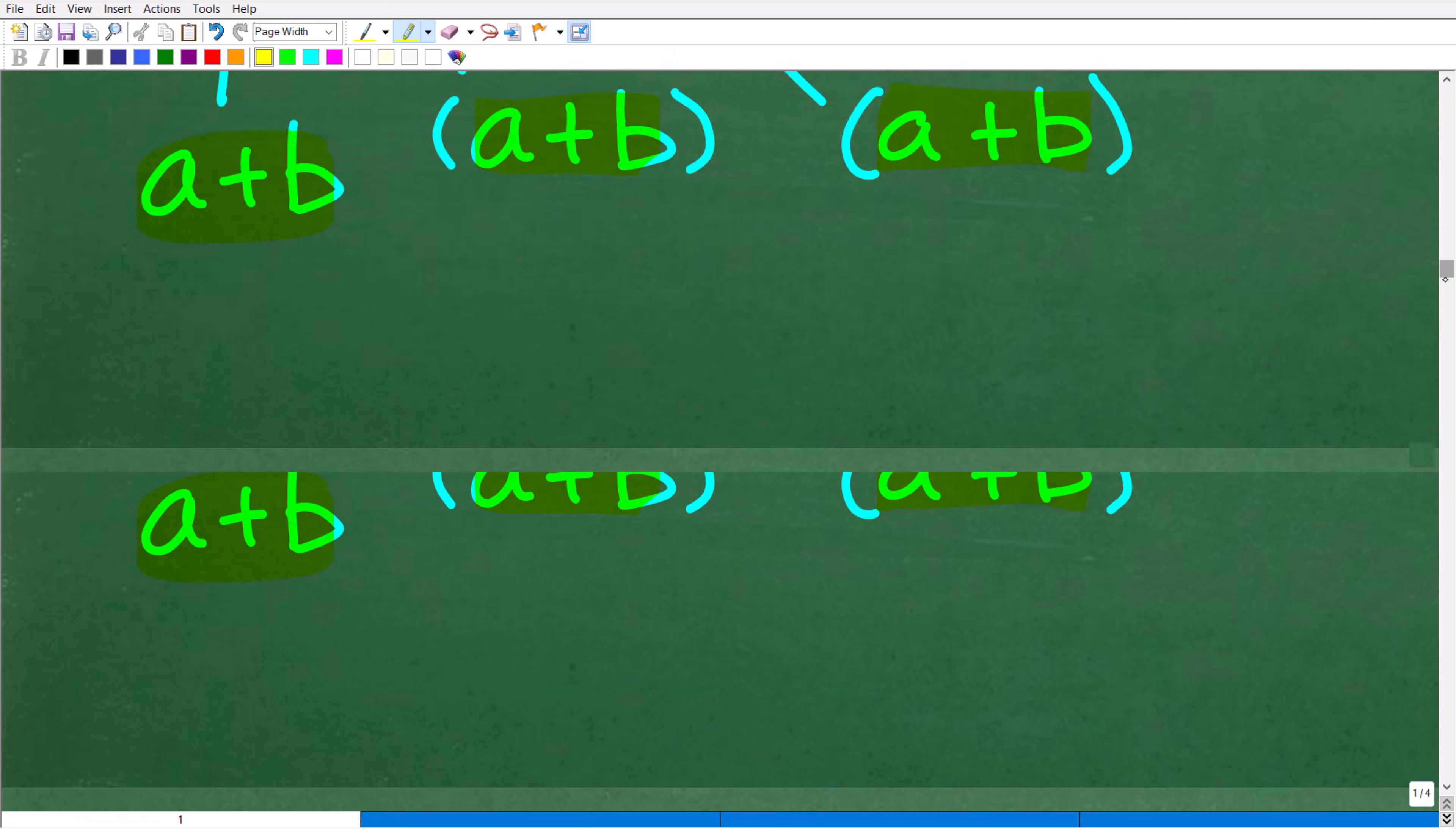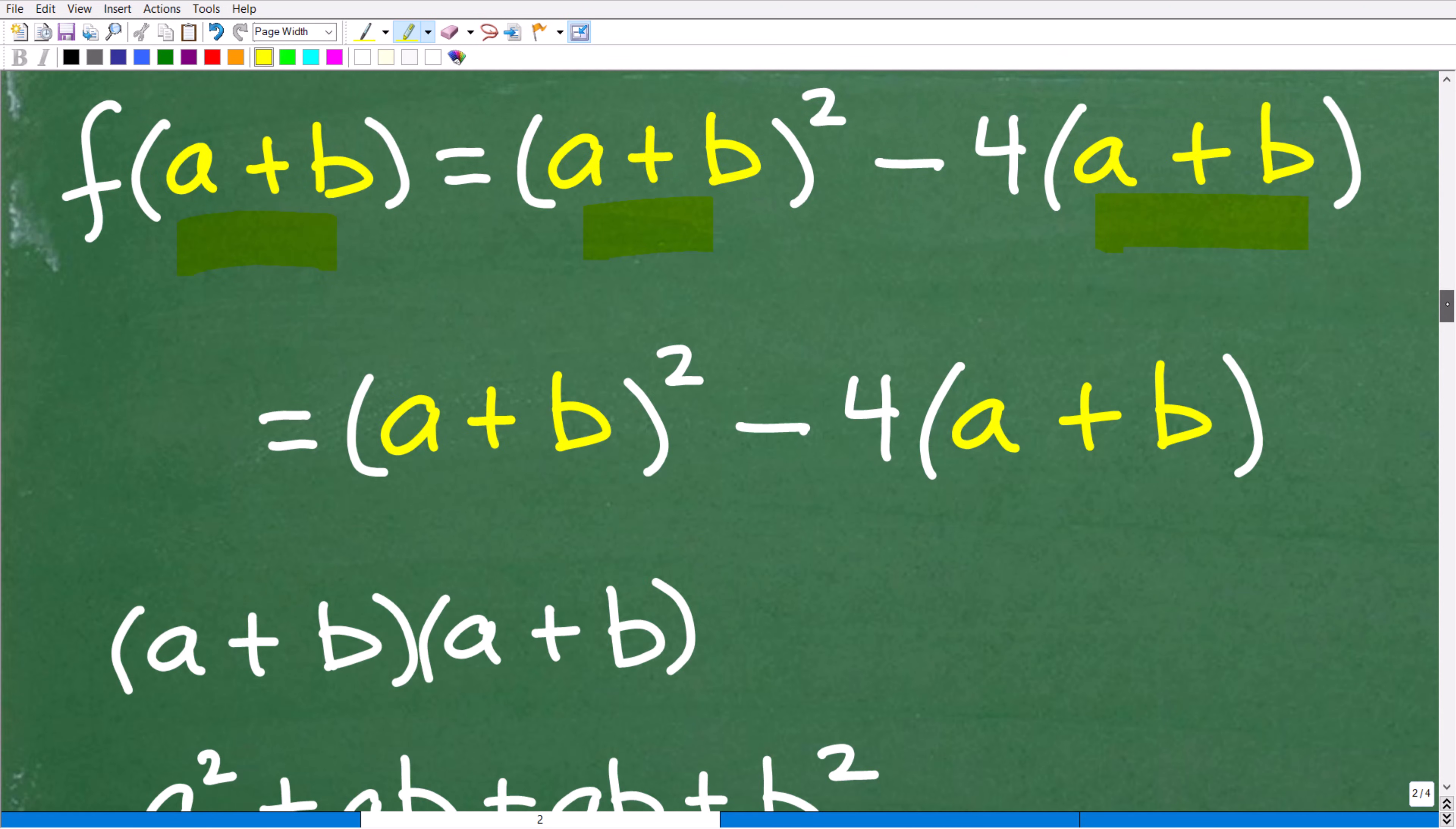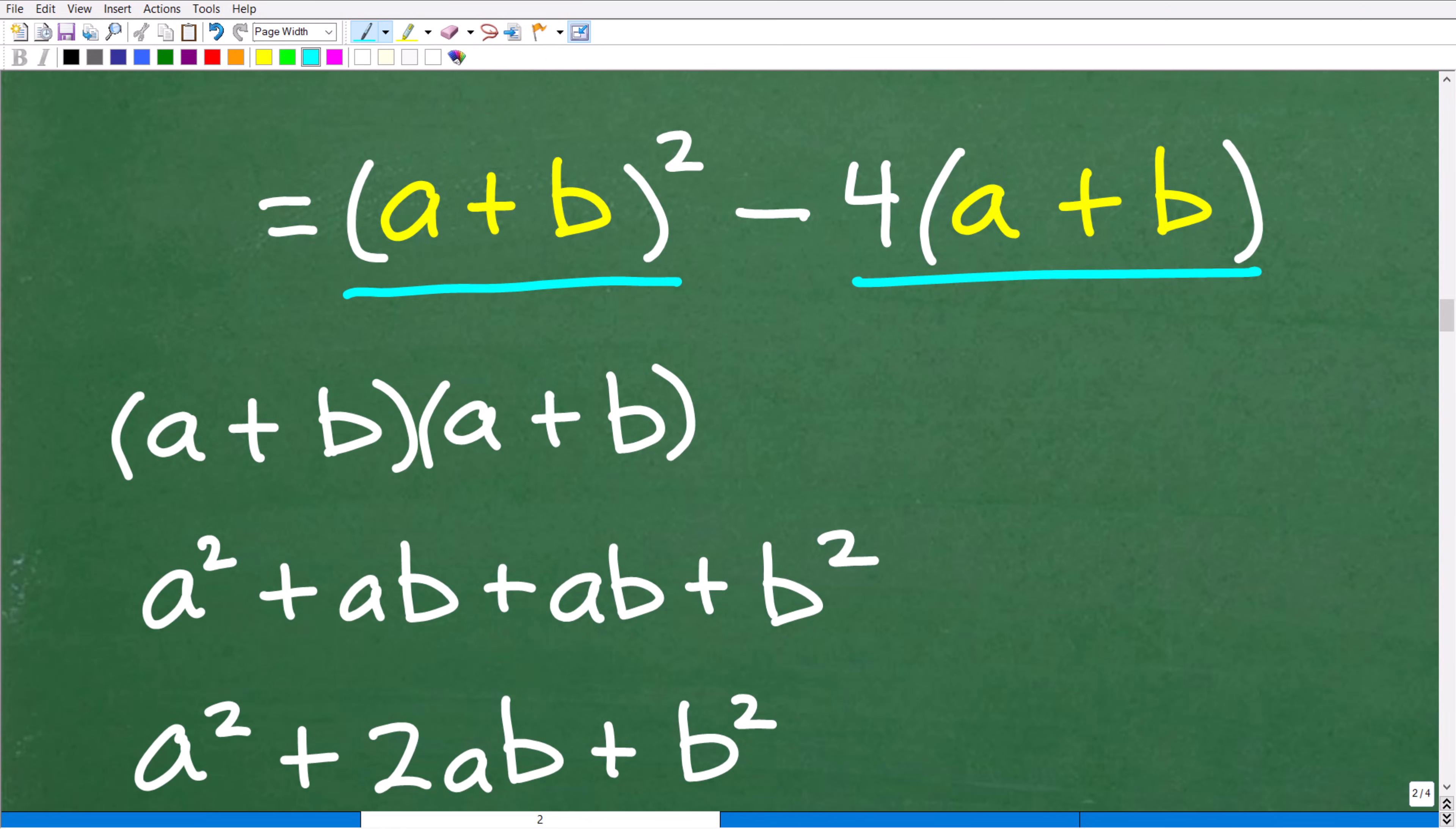This is exactly how you would want to set this problem up. Given this function, let's find f(a+b). You can see here I'm replacing these x's with a+b. Hopefully you are up for some algebra. The algebra that we need to do is to figure out what (a+b)² is. Let's simplify (a+b)². So (a+b)² is (a+b)(a+b).